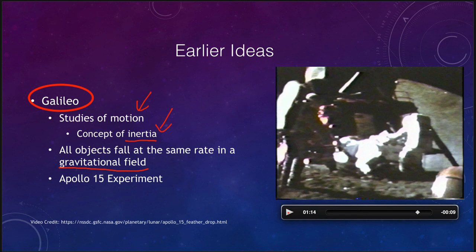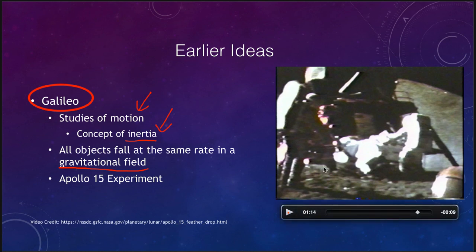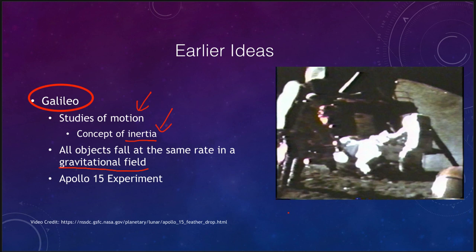Hopefully what you noted there as you watched those two objects fall was not only did they fall at the same rate — the hammer and the feather hit the ground at the same time — but they also fell a lot slower because of the reduced gravitational field of the moon.